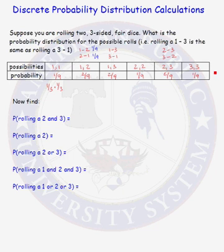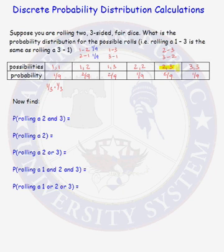Now we have our probability distribution function table, and we can answer any probability question by looking at the numbers and combining values from the table. For our first probability calculation: what is the probability of rolling a 2 and a 3? There is only one possibility for that scenario, and the probability of rolling a 2 and a 3 is two-ninths.